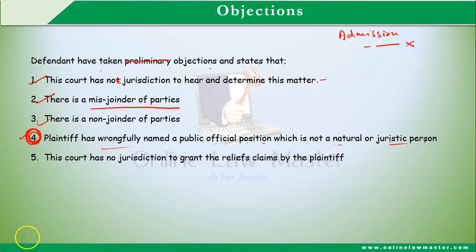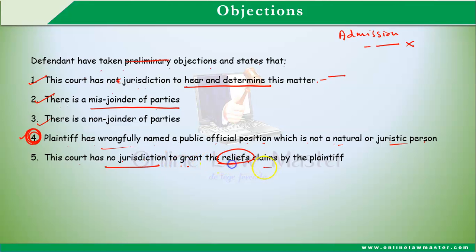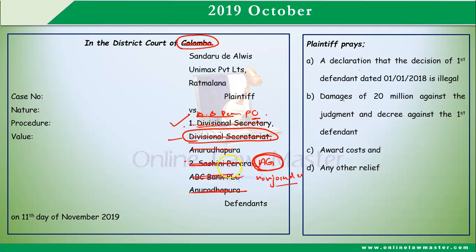A further objection is that this court has no jurisdiction to grant the reliefs claimed. The plaintiff is seeking a declaration against a public officer's decision. Under the Interpretation Ordinance, the District Court has no power to grant such a declaration against a public officer's decision. Therefore, this court cannot grant the reliefs prayed for.